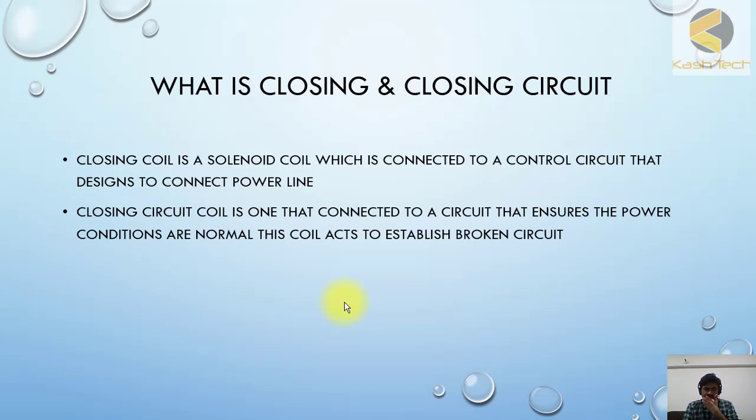Closing coil is one that connected to a power circuit that ensures that power conditions are normal. This coil acts to establish broken circuit. So basically there is a switch or it could be an out-of-close relief which is in. Now you want to connect or energize the load.